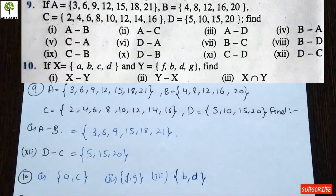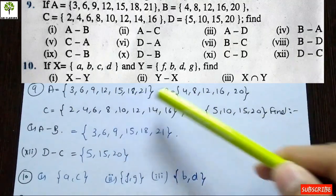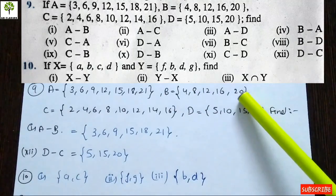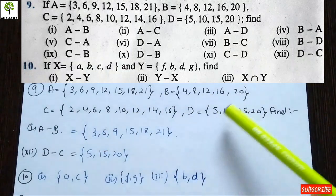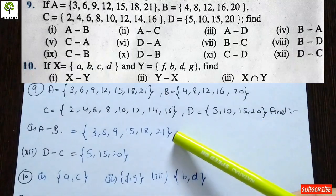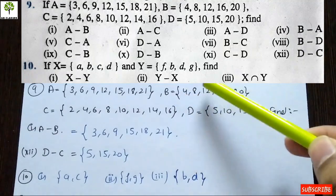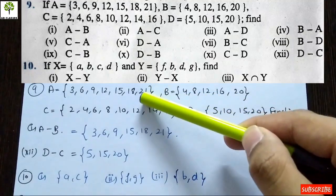In question number 9, set A = {3, 6, 9, 12, 15, 18, 21} which are multiples of 3. Set B = {4, 8, 12, 16, 20} which are multiples of 4. Set C contains multiples of 2 up to 16. Set D = {5, 10, 15, 20} which are multiples of 5. For the first part, we find A minus B: we need to remove B's elements from A. The common element between A and B is 12.